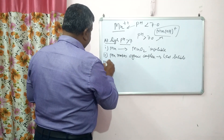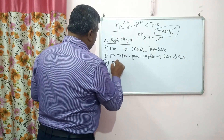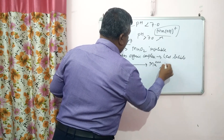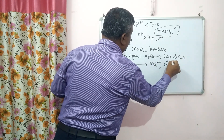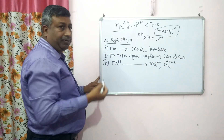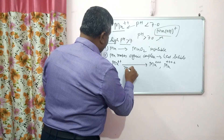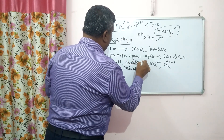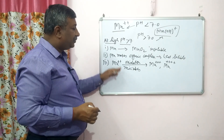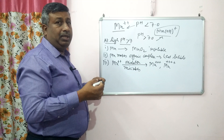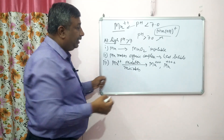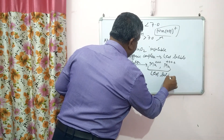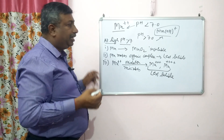The third reason is that manganese is oxidized by microbes into the trivalent form Mn³⁺ and the tetravalent form Mn⁴⁺. This oxidation process involves the loss of electrons and is carried out by microbes. The activity of these microbes is more at pH 7 and above. These oxidized forms are less soluble, and that is why manganese availability is reduced at high pH.